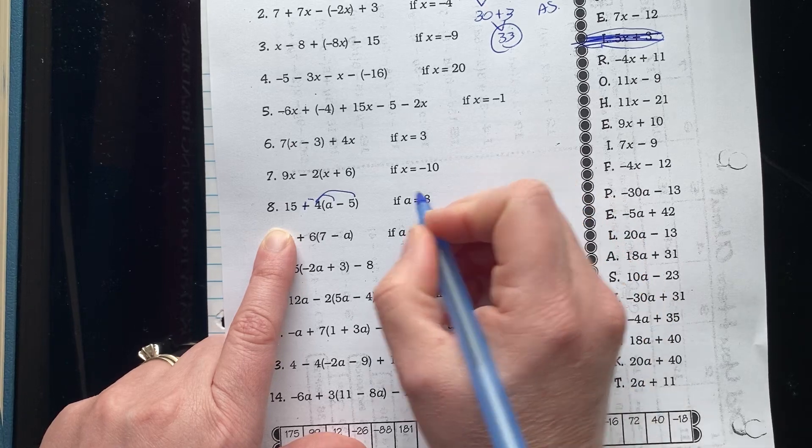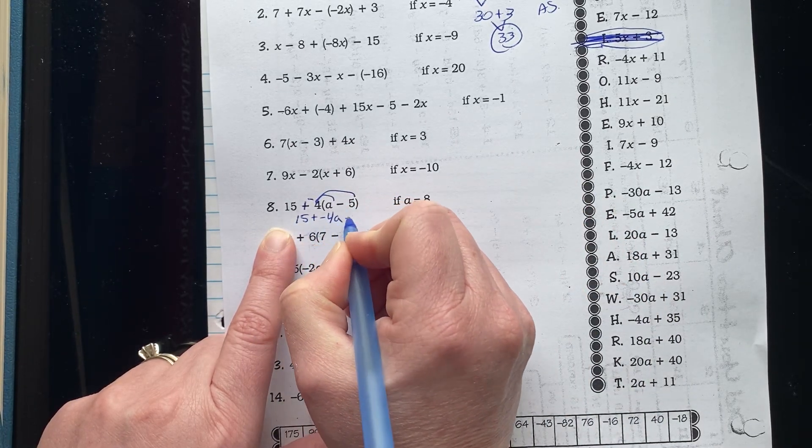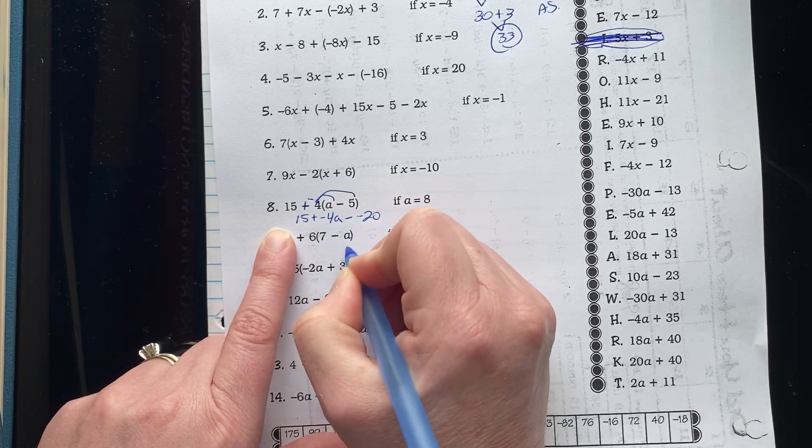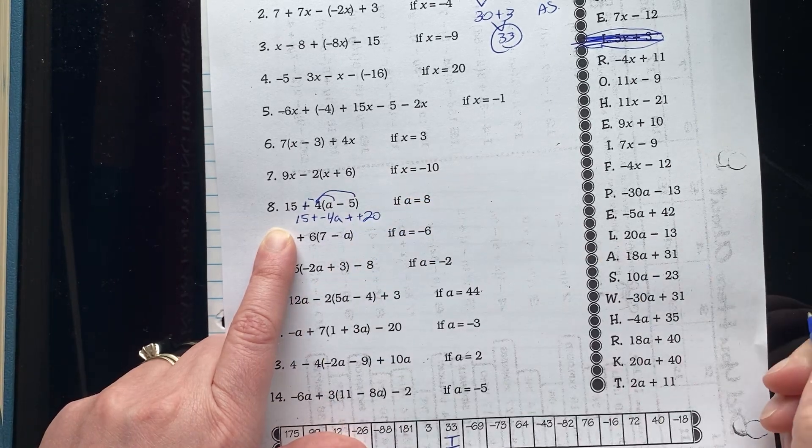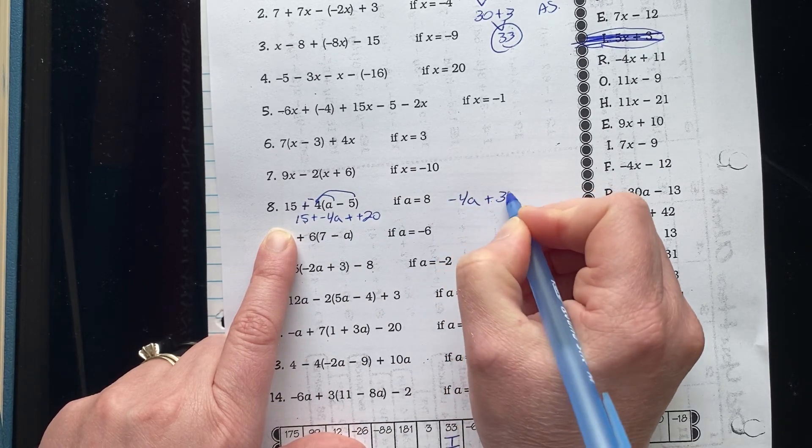When I'm simplifying, I get 15 plus negative 4a minus negative 20, which I'm going to add the opposite to. I get negative 4a plus 35.